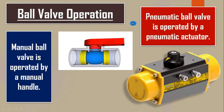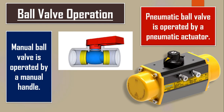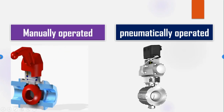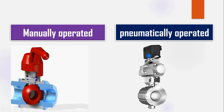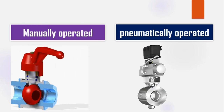A pneumatic ball valve is operated by a pneumatic actuator. That means a ball valve that is operated by a pneumatic signal is known as a pneumatic ball valve. The valve opens or closes by the use of this pneumatic actuator. Now we will discuss how this pneumatic signal is applied to the pneumatic actuator.